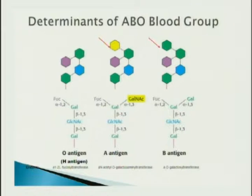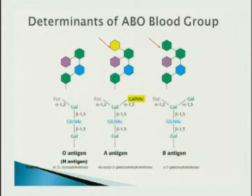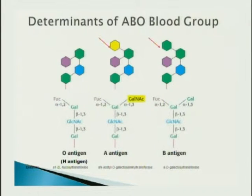The determinants of the ABO blood group: the H antigen (also group O) means you have neither enzyme and are not adding A or B sugars to your H antigens. If you're A, you have the A enzyme adding GalNAc (the yellow sugar) to your H antigen. If you're B, you have the B enzyme adding galactose to the H antigen. If you're AB, you have both enzymes.